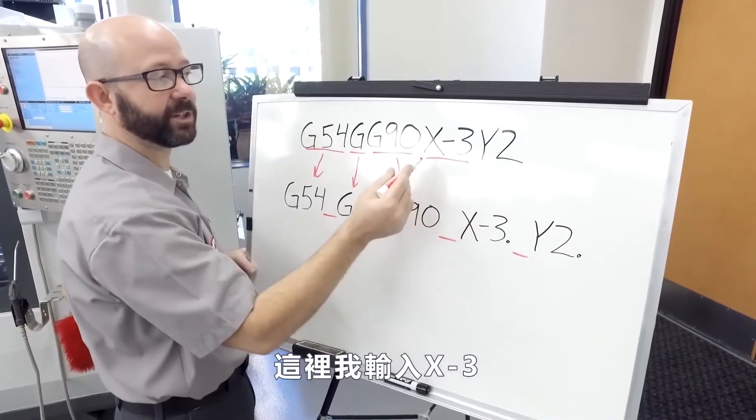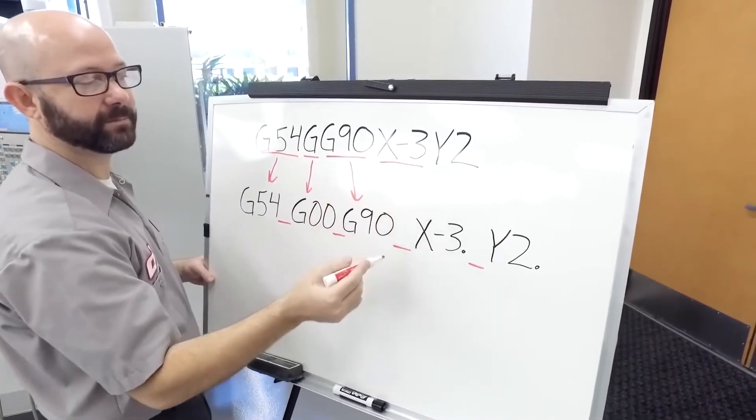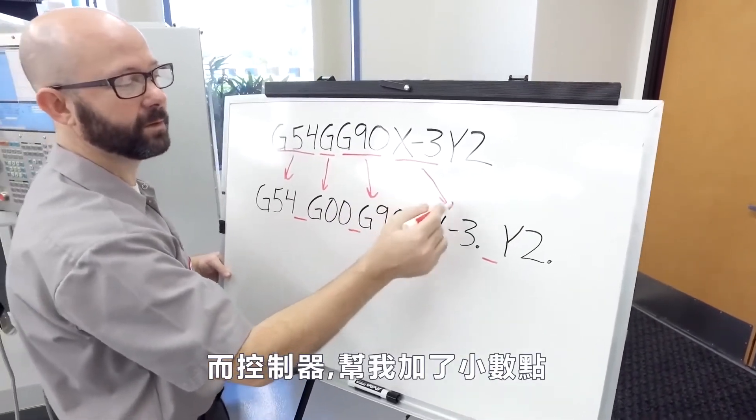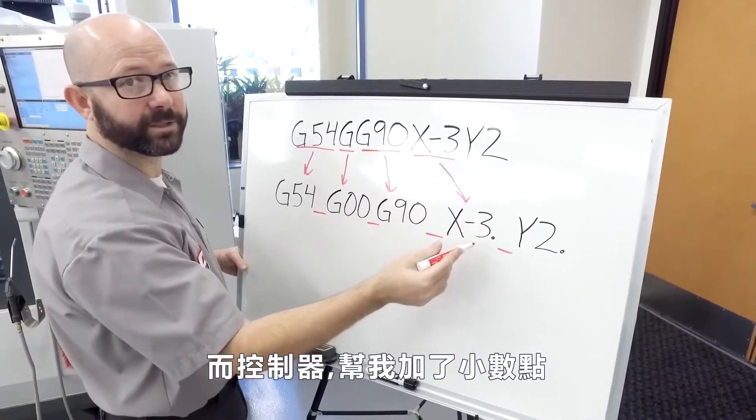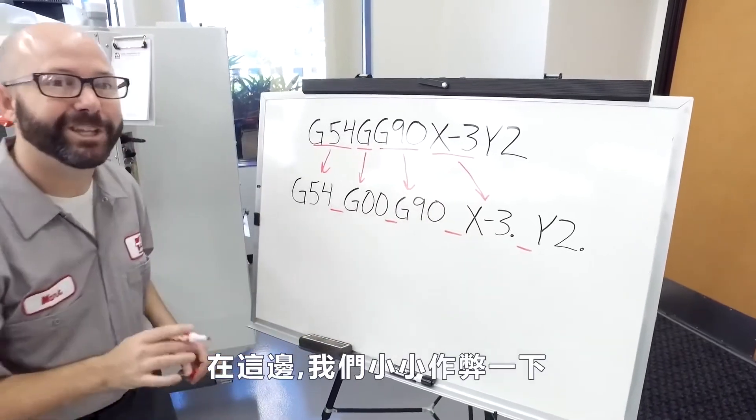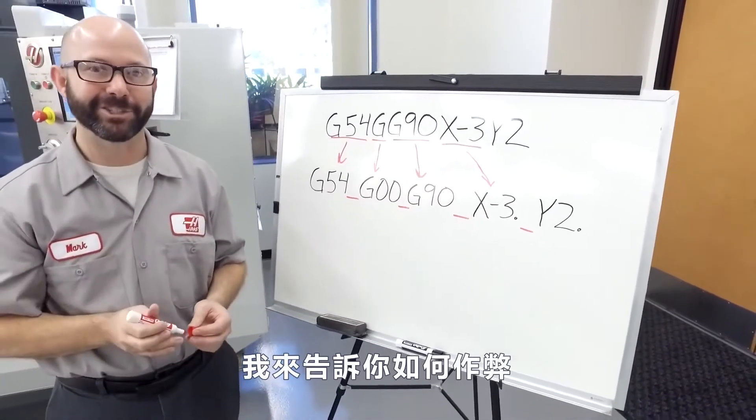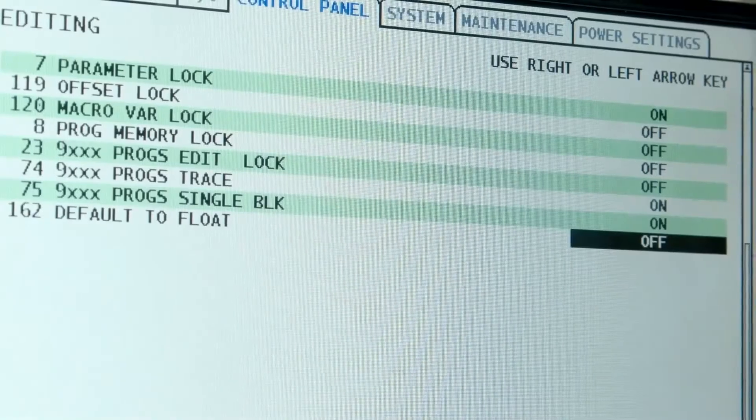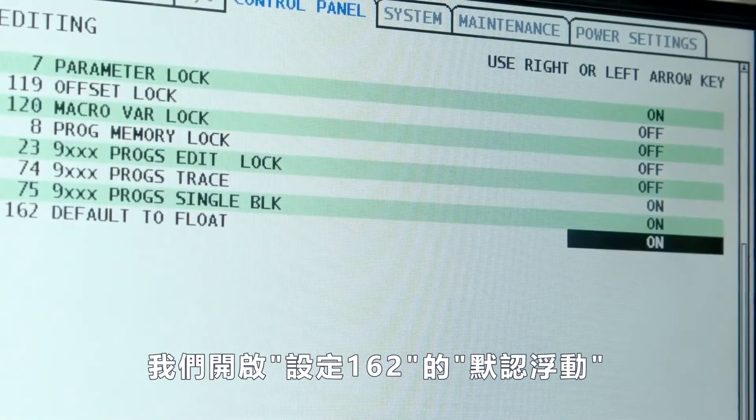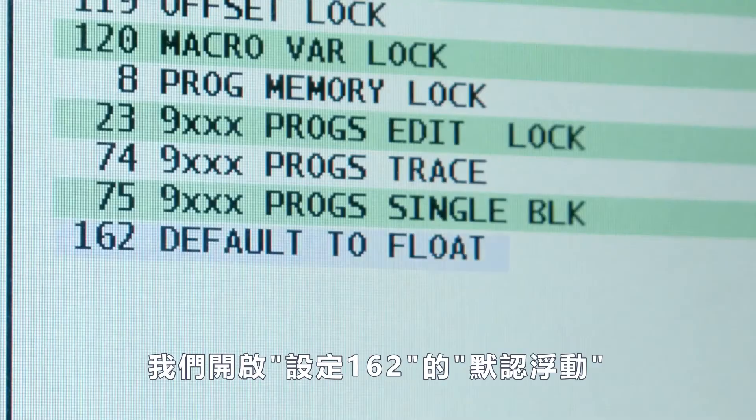Here I entered X minus 3 and the control added the decimal point for us. Right here we cheated a little bit and I'm going to show you how to cheat as well. We turned on setting 162, default to float.